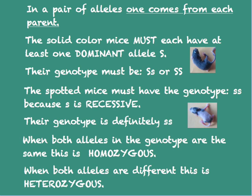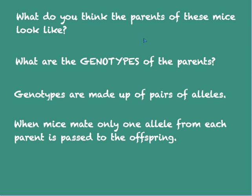A solid colored mouse could be either homozygous or heterozygous, whereas a spotted mouse is definitely homozygous — homozygous for the recessive allele, which can only express itself in the phenotype when it is in the homozygous state. What do you think the parents of these mice look like? What are their phenotypes? What are the genotypes of the parents?